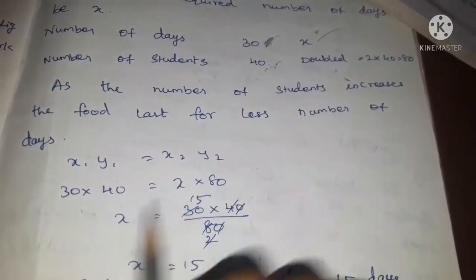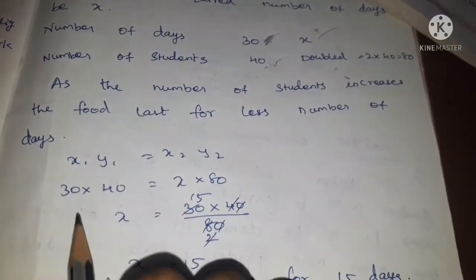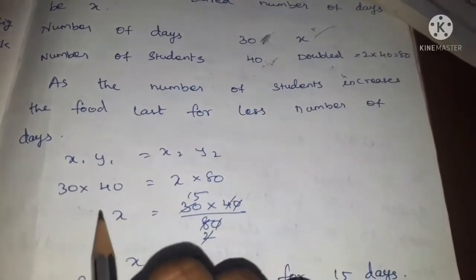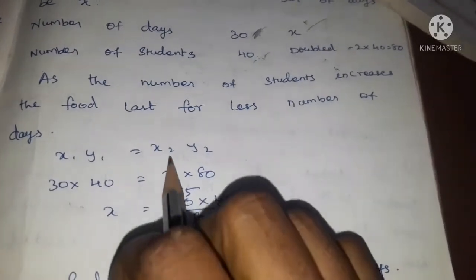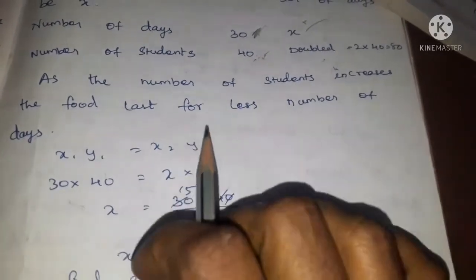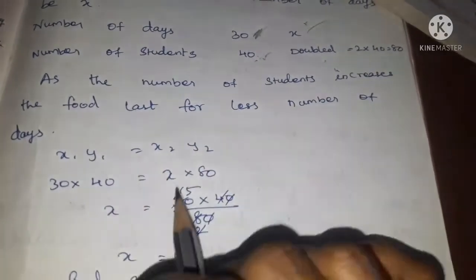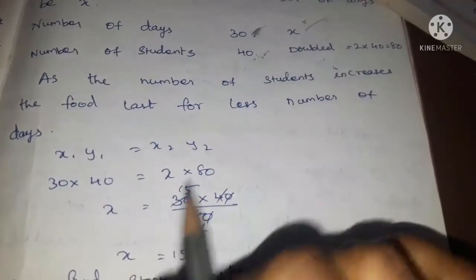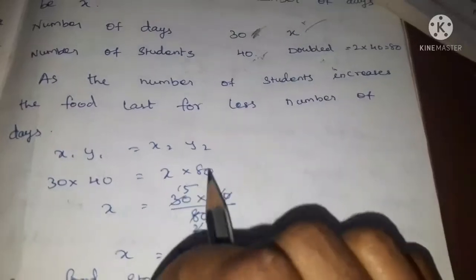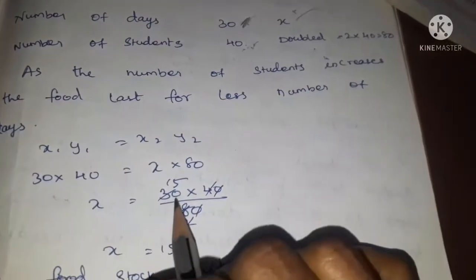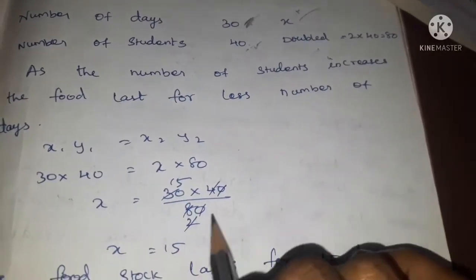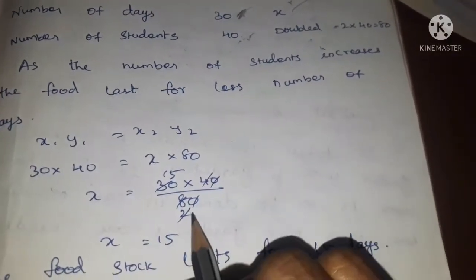x1 y1 equal to x2 y2. x1 value 30 into y1 value 40 equal to x2 value x into y2 value 80. So x equals 30 into 40 by 80.